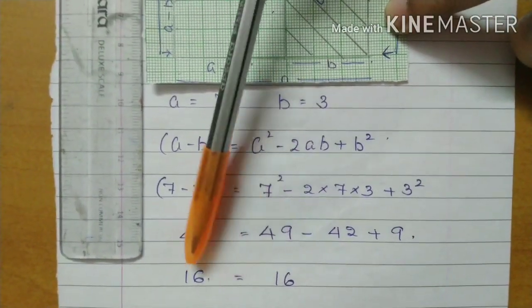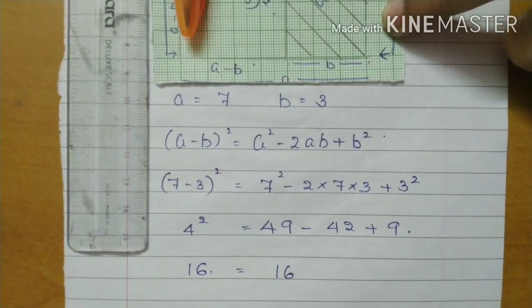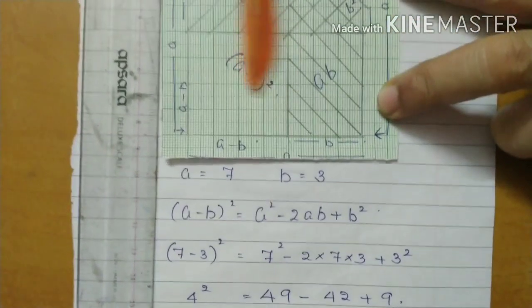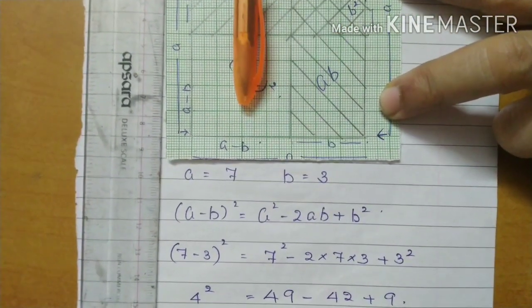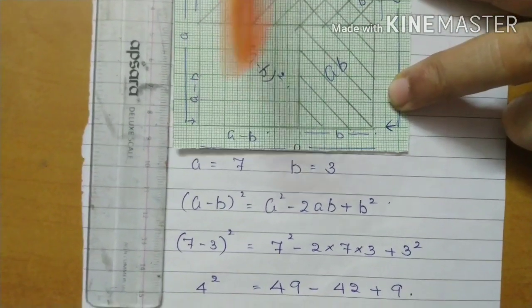So 49 minus 42 plus 9, that is also 16. We are getting the same answer. This is the answer we want, (A minus B) the whole square. The unshaded part, that not shaded part.